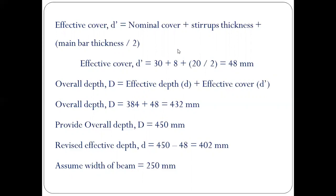Overall depth D equals effective depth plus effective cover: 384 + 48 = 432 mm. We round this up to the nearest value divisible by 50 or 100, so overall depth is taken as 450 mm. The revised effective depth then comes to 402 mm. Width of the beam is normally taken as the thickness of the wall; here we assume slightly greater, taking width as 250 mm.